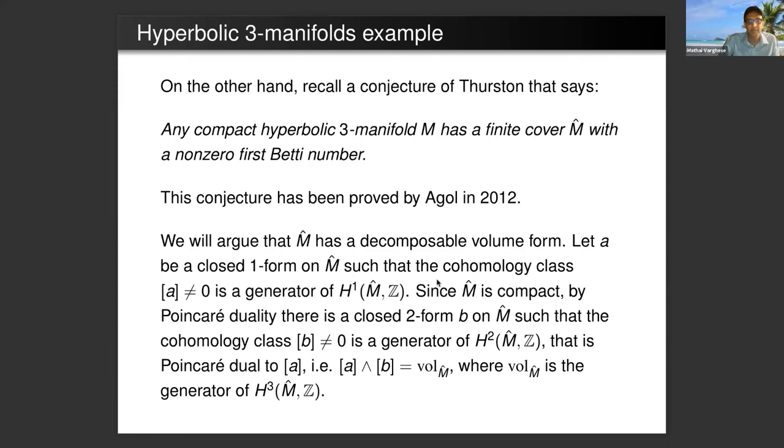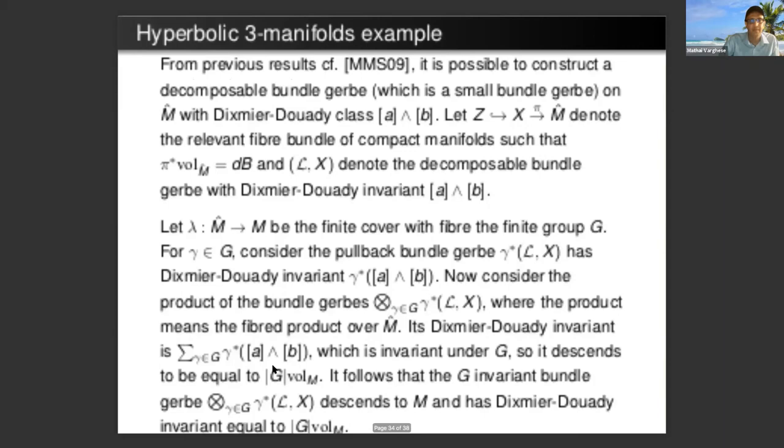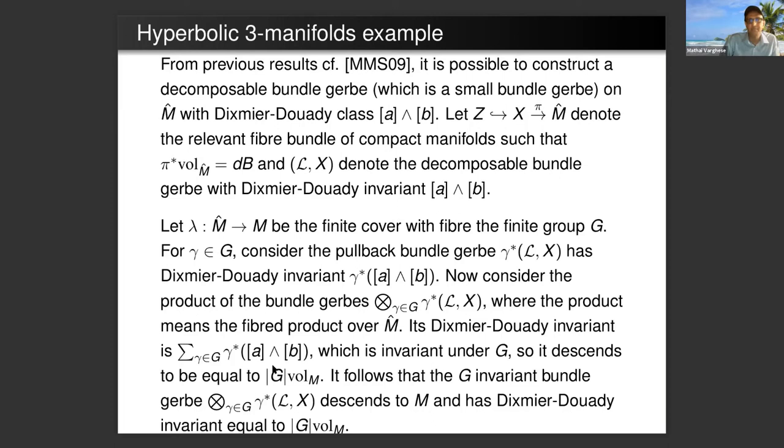These will never have volume forms which are decomposable. However, we can still prove an index theorem for such manifolds. We use the following conjecture of Thurston that says that any compact hyperbolic three manifold M has a finite cover M-hat with a non-zero first Betti number. This conjecture was proved by Agol in 2012. We argue that M-hat has a decomposable volume form. Let A be a closed one form on M-hat such that the cohomology class of A is a generator of H^1.